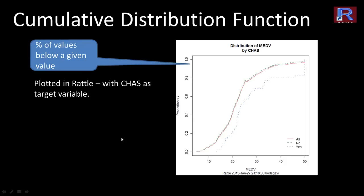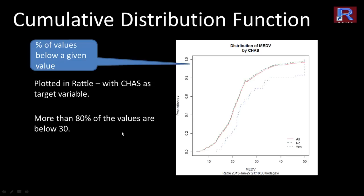In RATTLE, we plotted three different charts: one for overall and one each for CHAS equals no and yes, because CHAS was chosen as the target variable. When you plot the cumulative distribution function in RATTLE with a target variable, it shows the overall chart plus charts for each category of the target, whether categorical or numerical. We can see that more than 80% of the values are below 30.